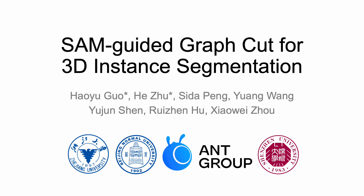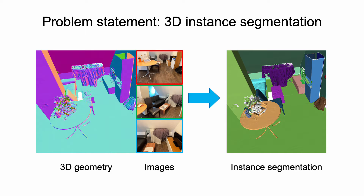We present a novel 3D segmentation method with SAM-guided graph cut. Given 3D geometry and calibrated multi-view images of a scene, we aim to obtain the 3D instance segmentation of the scene.